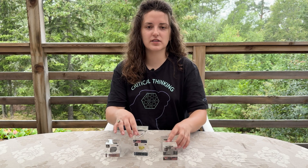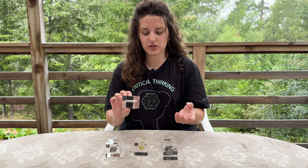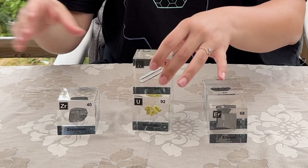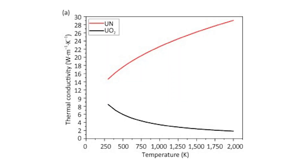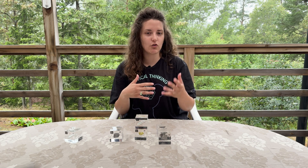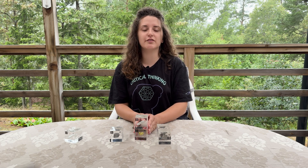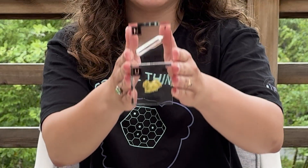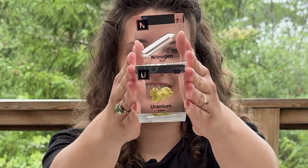With the so-called Generation 4 reactors, there is quite some interest to explore new types of fuels that are more efficient than uranium dioxide. This is something I am actually working with — instead of oxygen, I use nitrogen to create uranium nitride as a fuel. It is a much better material for heat transfer, much more efficient and long-lasting inside the reactor, and a very good fuel candidate for new types of Generation 4 reactors.